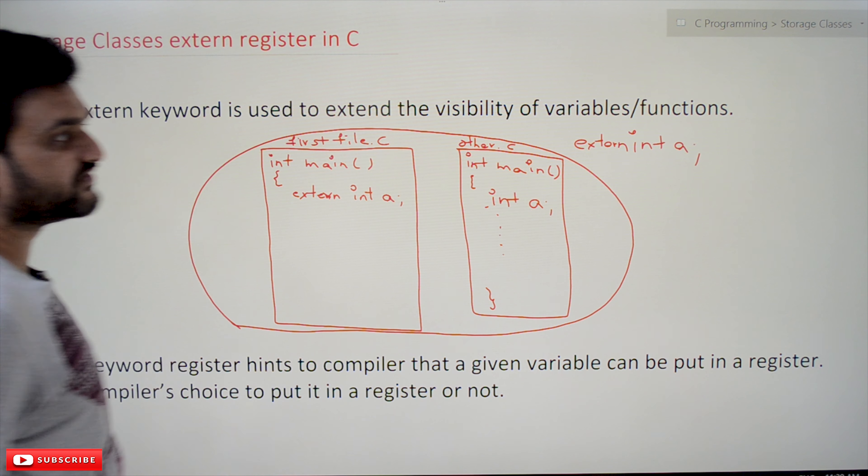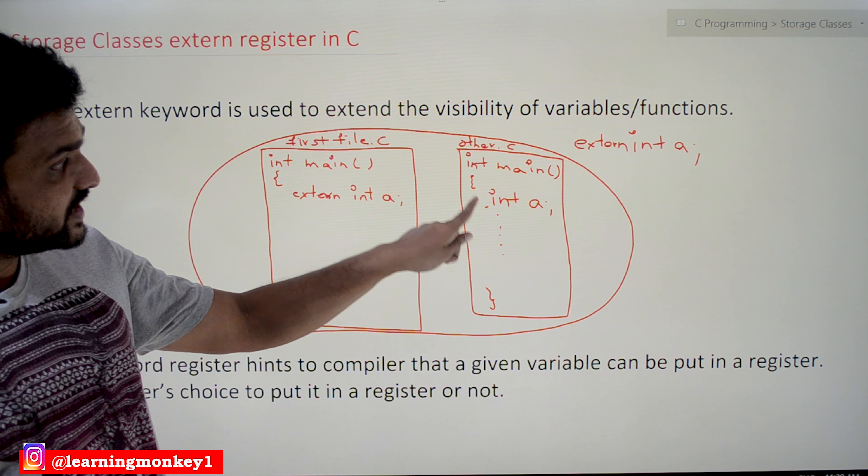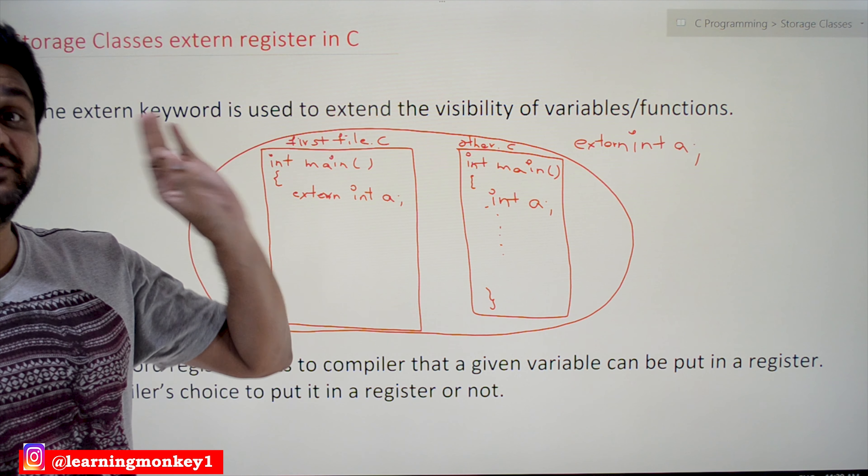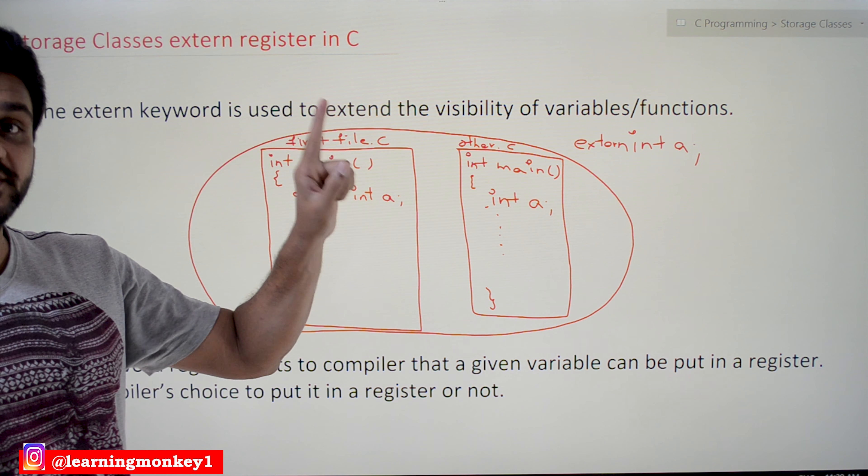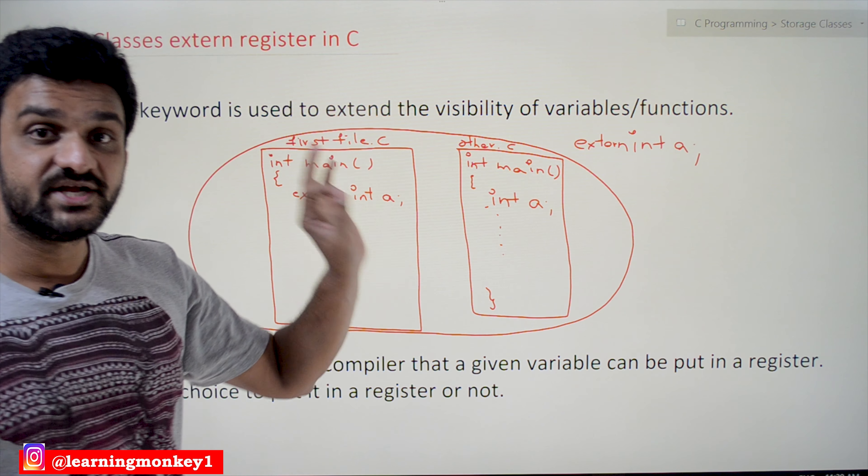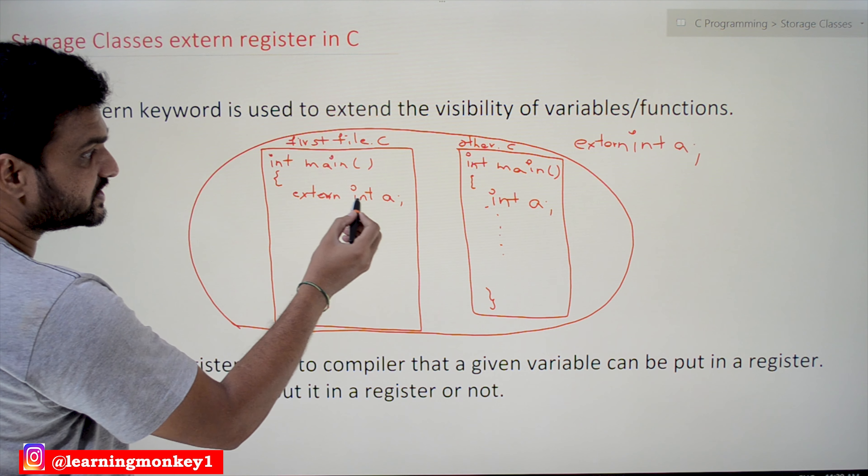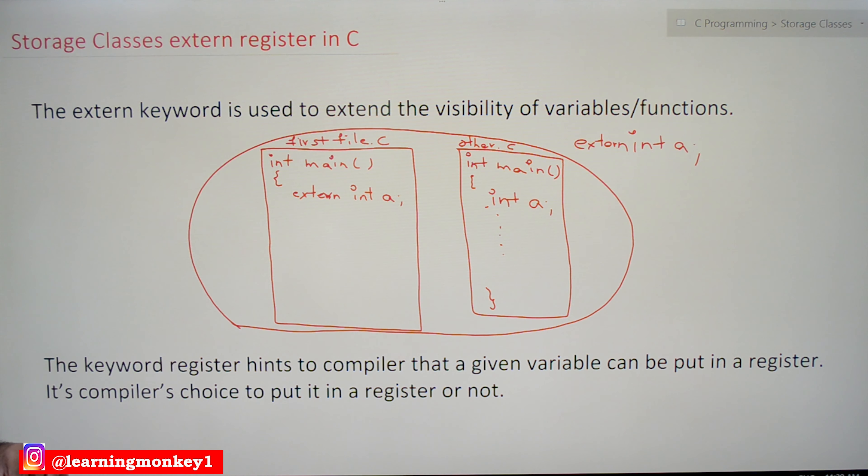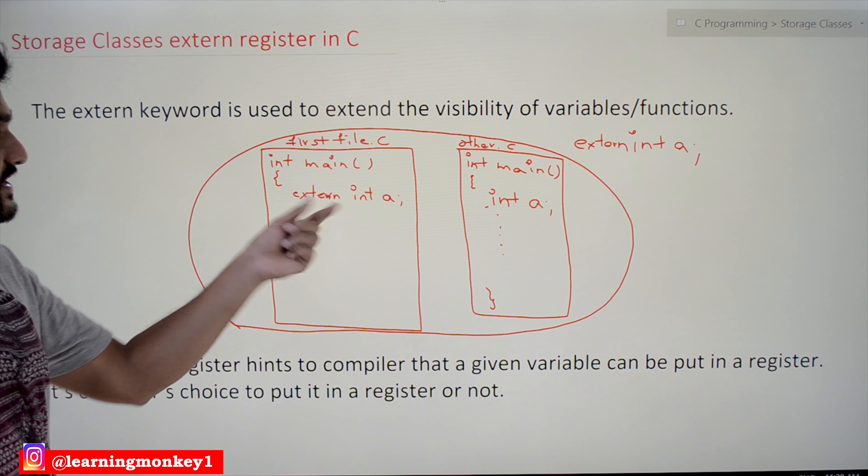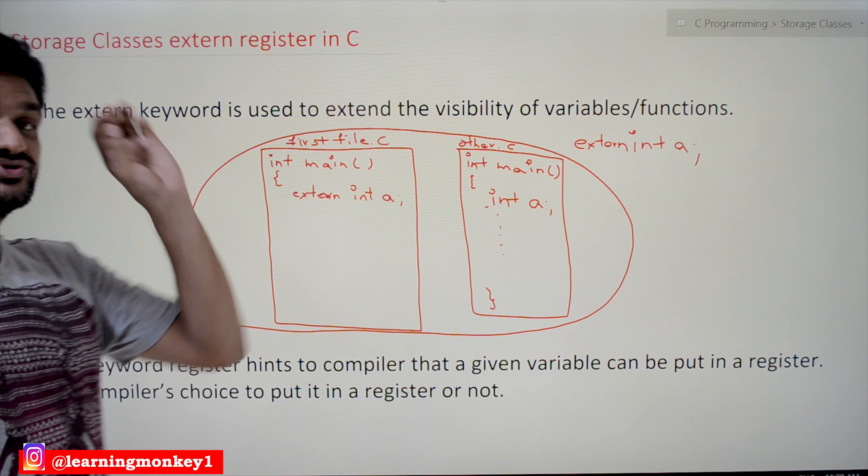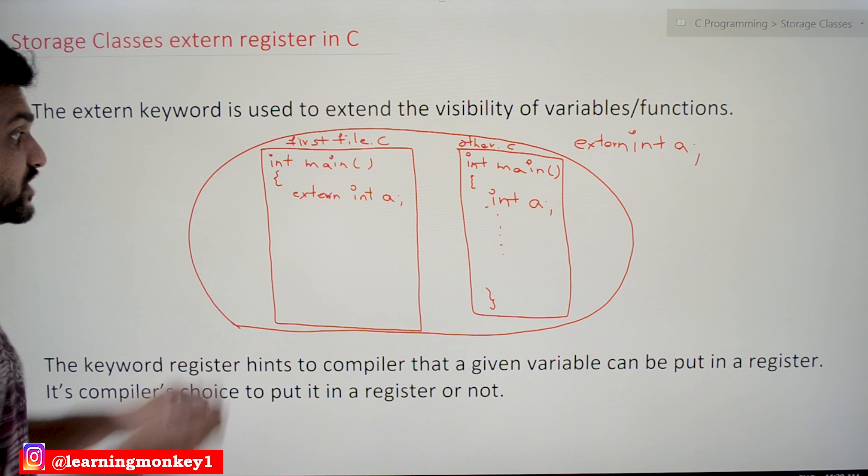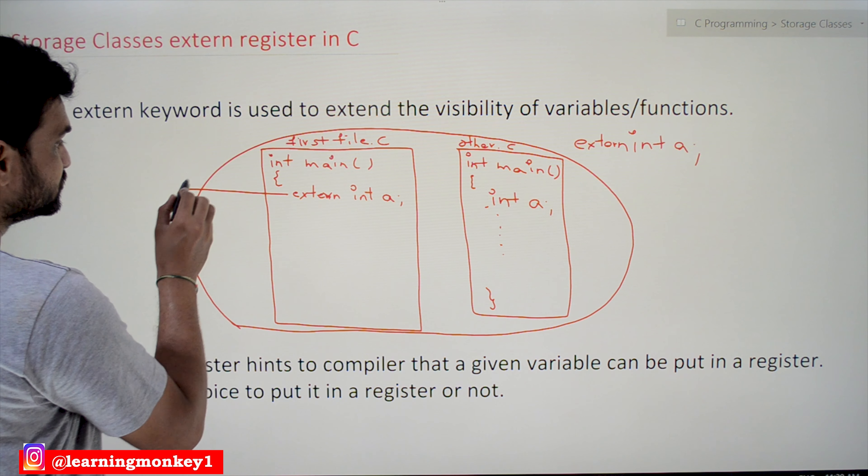These are the two files: first file dot c and the other one is other file dot c. In the other file, this int a has been defined. Try to get that point - int a is defined. In first file we have used extern int a.